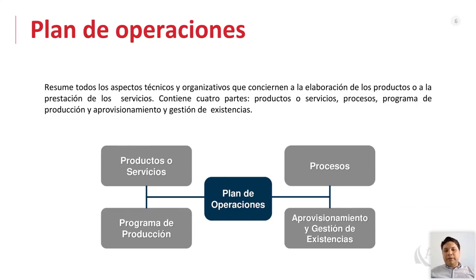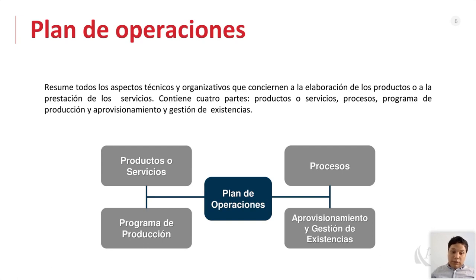Comenzamos con la parte del plan de operaciones. Esto resume todos los aspectos técnicos y organizativos que conciernen a la elaboración del producto o la presentación de servicios. Contiene cuatro partes: productos o servicios, programa de producción, procesos, y aprovisionamiento y gestión de existencias. Una vez que tienes tus insumos, tienes que almacenarlos. Una vez que tienes tu producto acabado, también tienes que almacenarlo. Todo eso forma parte del plan de operaciones.